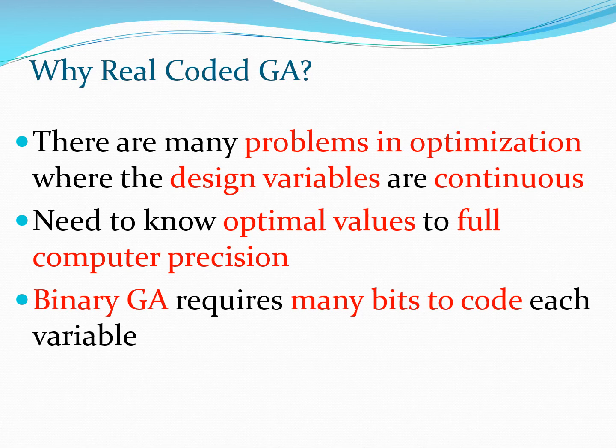We have spent a lot of time discussing binary genetic algorithms. We have seen that many problems can be solved using binary GA, and we have also seen the beauty of binary GA in terms of using bits and strings to perform various crossings, mutation, mating pool selection, and so on — such that these are close to what is actually done in biological species.